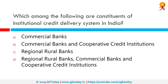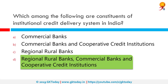Which among the following are constituents of the institutional credit delivery system in India? The correct answer is regional rural banks, commercial banks, and cooperative credit institutions. The institutional credit has been conceived to play a pivotal role in the agricultural development of India. However, the persistence of money lenders in the rural credit market is still a major concern.